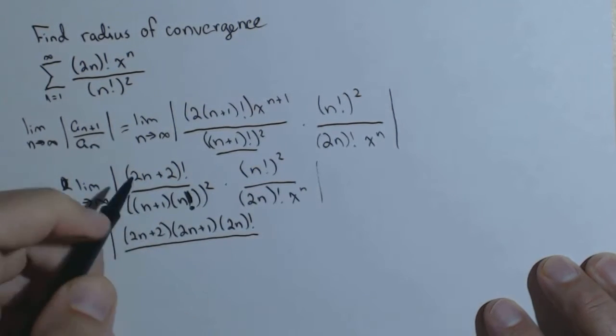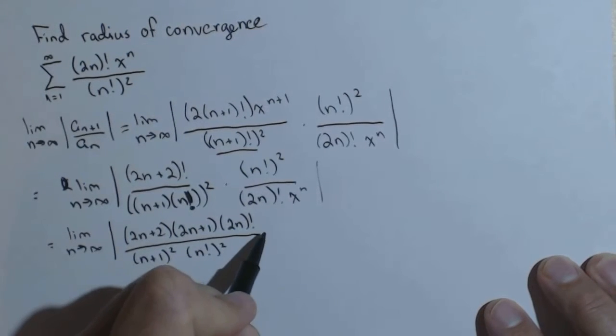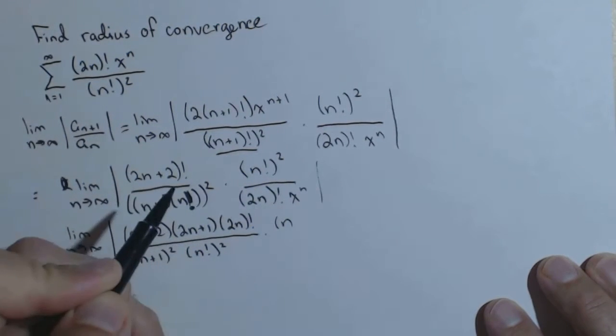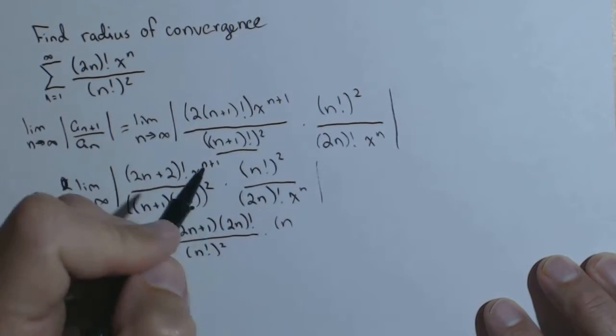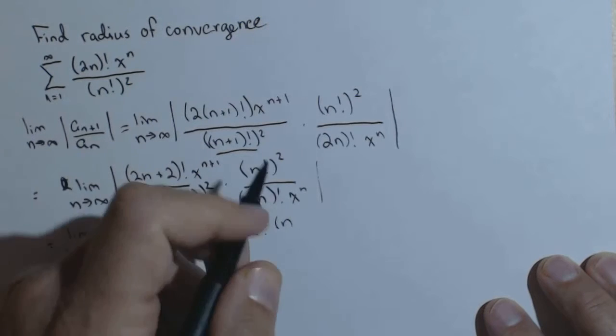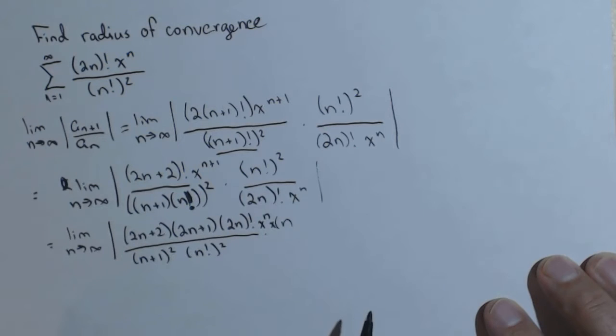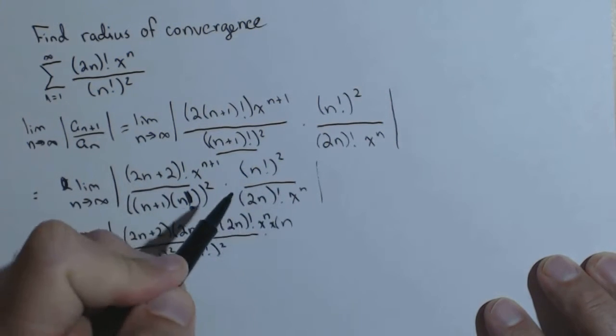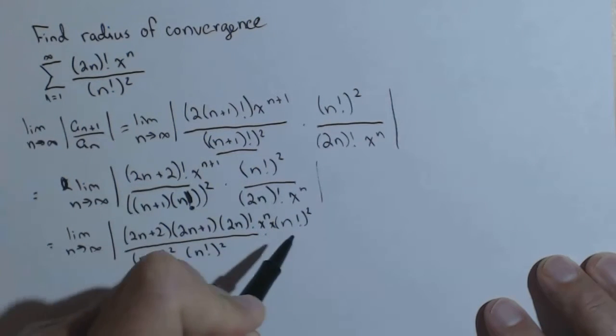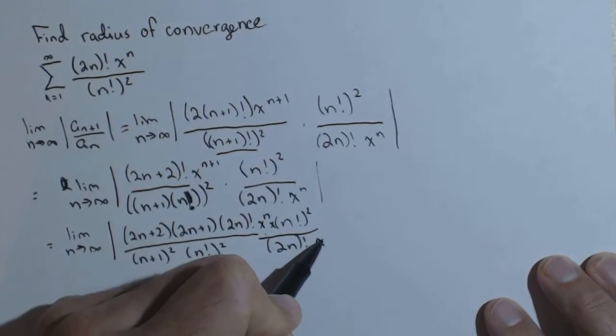Here, I'm going to distribute the square. So I have an n plus 1 squared and an n factorial squared. And we see another cancel. And somewhere along the lines, I lost my x to the n plus 1 here. So I'm going to rewrite that x to the n plus 1 as x to the n times x.